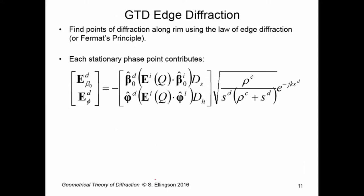Let's get down to it. GTD edge diffraction — here is the formulation. First, you find all the points of diffraction along the rim, or in general the edge, using the law of edge diffraction.